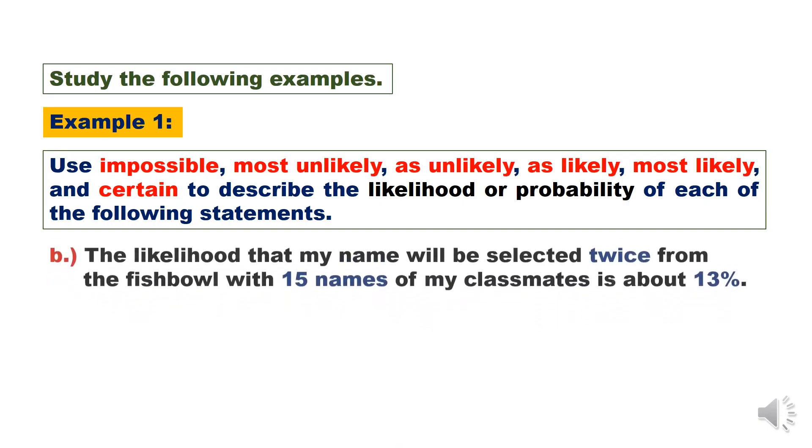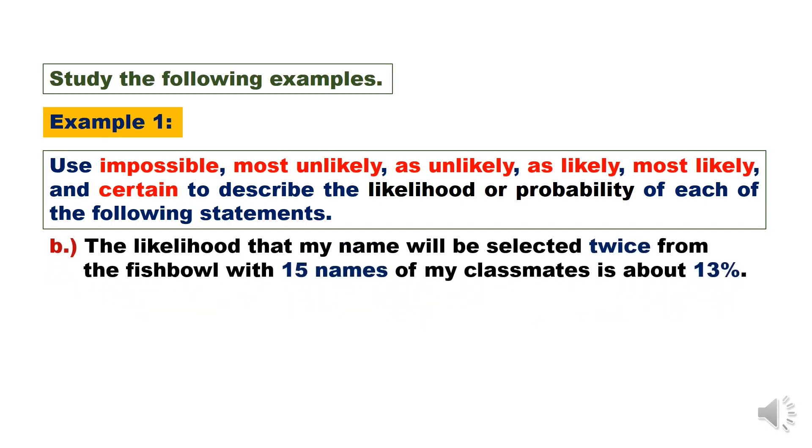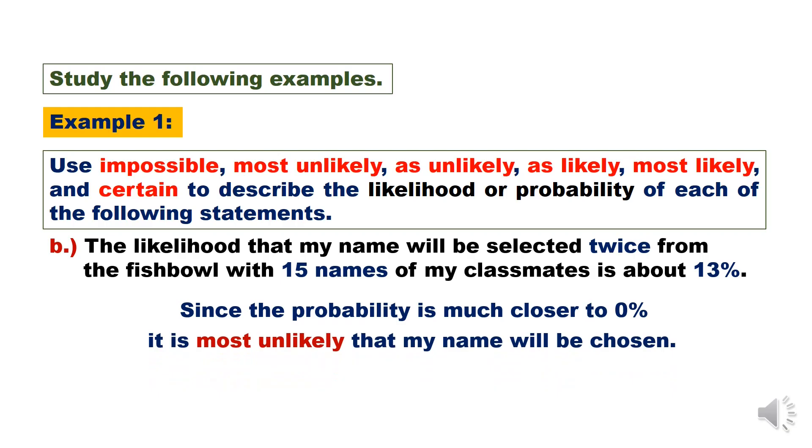B. The likelihood that my name will be selected twice from the fishbowl with 50 names of my classmates is about 13%. Since the probability is much closer to 0%, it is most unlikely that my name will be chosen, but not impossible.